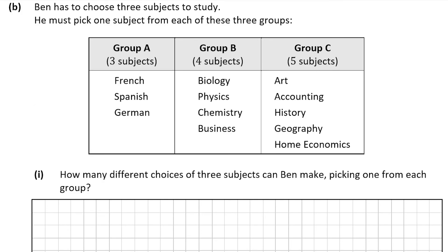Now let's have a look at B part 1. Ben has to pick three subjects from each of three groups — group A, B, and C — and we're asked how many different choices of three subjects Ben can make picking one from each group. Basically, how many different combinations can Ben have? For example, he can have French, Biology, Art, or French, Biology, Accounting, or French, Biology, History, and so on. He could also start with Spanish and go to Chemistry and then Art — there are a load of different combinations.